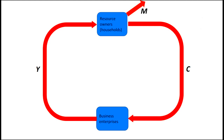In this very simple version of the world, C equals Y — consumption spending equals income. But of course it's more complicated than that, because households won't just spend all of their income on Australian-produced consumer goods. They'll spend some on imported goods, so there will be a flow of income out of the economy indicated by M — import expenditure. On the other hand, businesses in Australia will sell goods and services overseas, generating export revenue which flows back into the Australian economy.